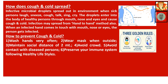How does cough and cold spread? Infective microbial droplets spread out in the environment when sick persons laugh, sneeze, cough, talk, sing, or cry. The droplets enter the body of a healthy person through the mouth, nose, and eyes, and cause cough and cold. Infection may also spread by the hand-to-hand method — when an infected hand comes in contact with the mouth, nose or eyes, the person gets infected. How to prevent cough and cold? Number one, wash hands very often. Number two, wear a mask when outside. Number three, maintain social distance of two meters. Number four, avoid crowds. Number five, avoid contact with diseased persons. Number six, preserve your immune system by following a healthy lifestyle.